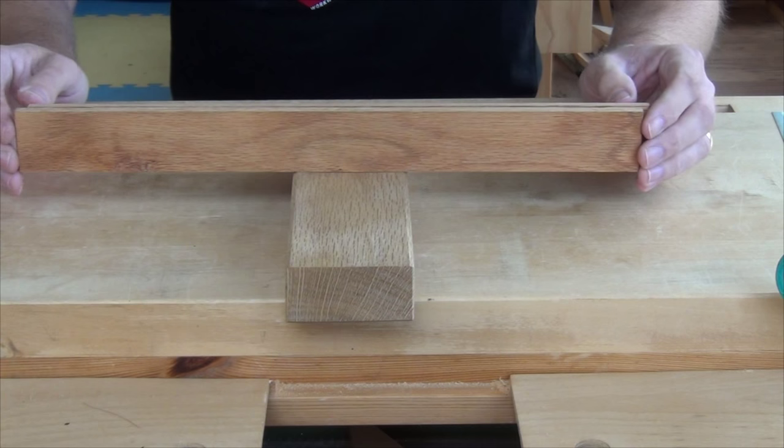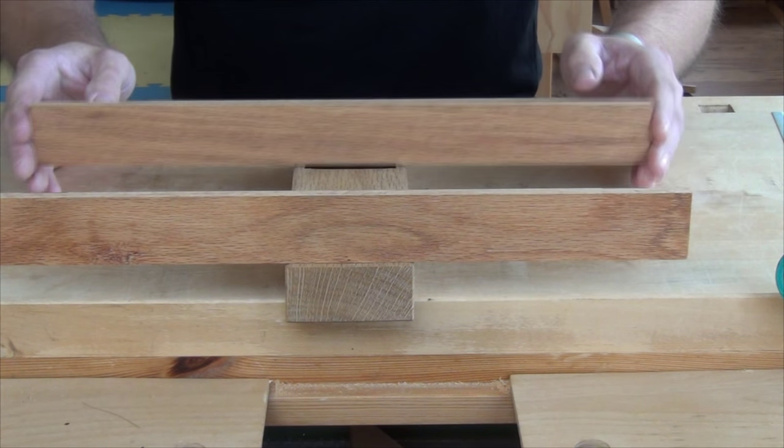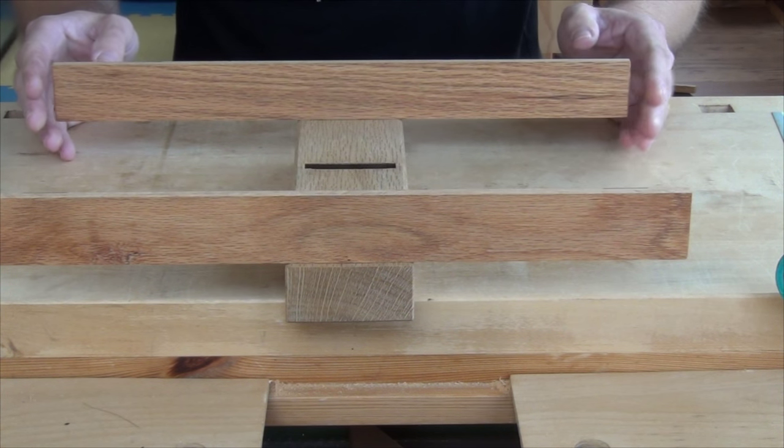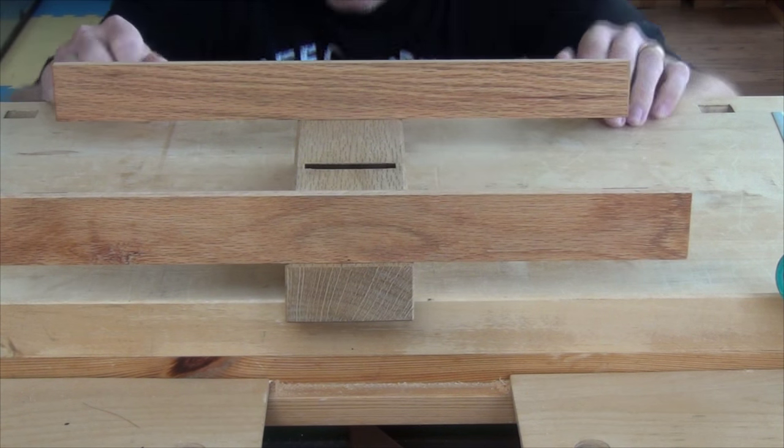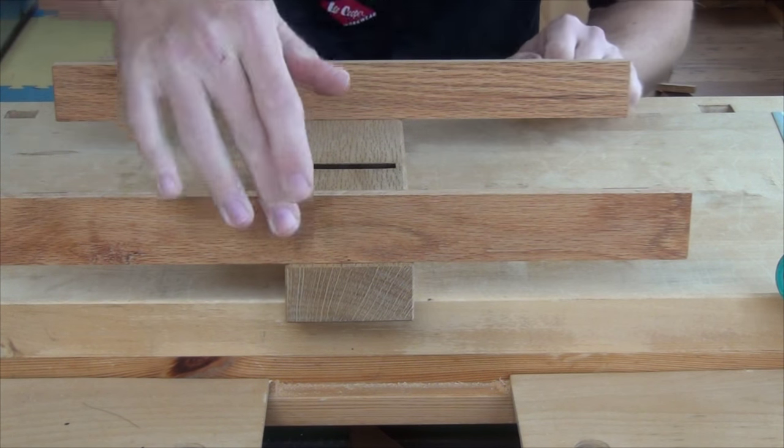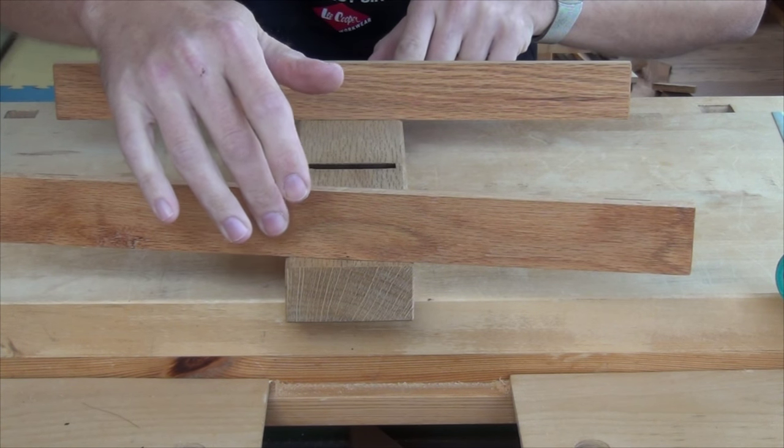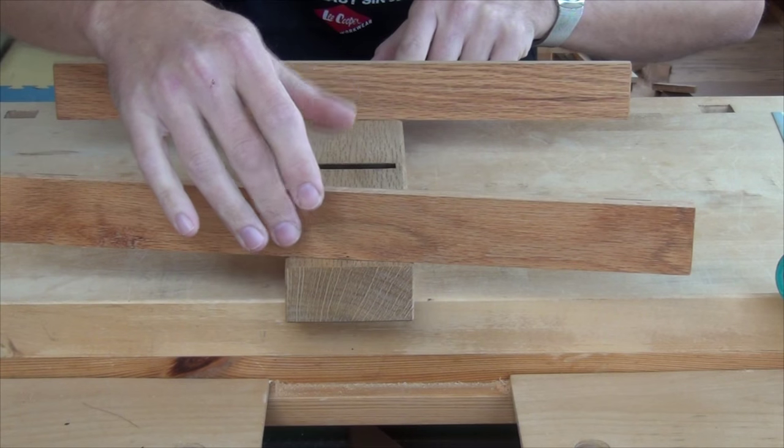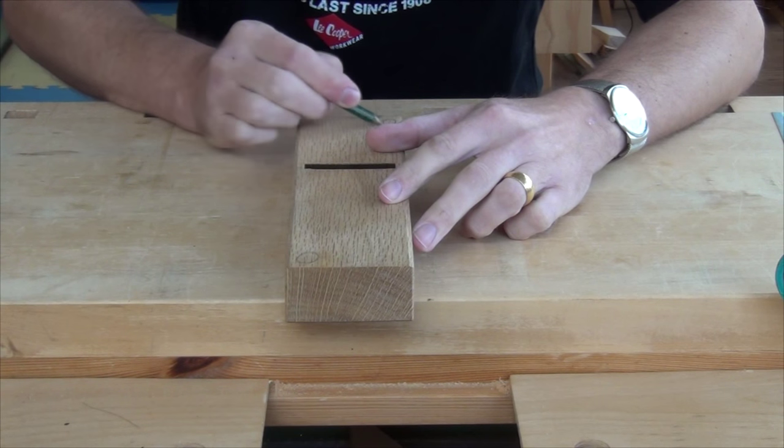I'm going to check for wind first. I'll place my winding stick at one end and at the other end and then sight across the two of them. I can see that this corner here and the opposite corner over here are slightly high compared to the others.